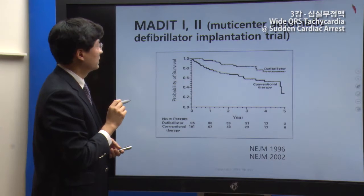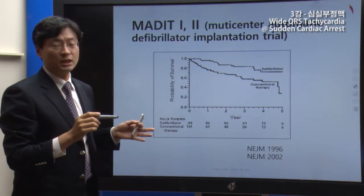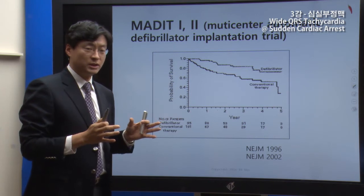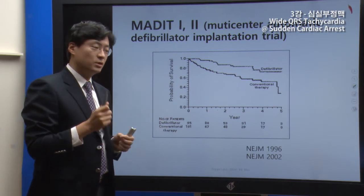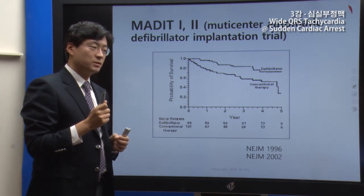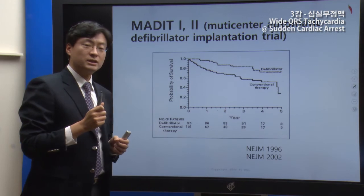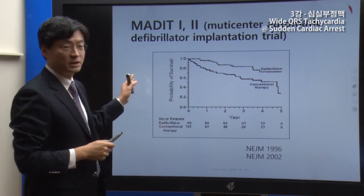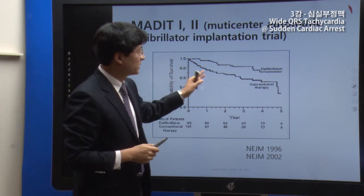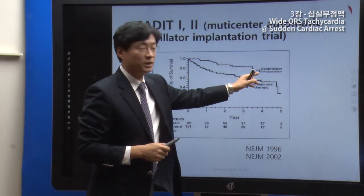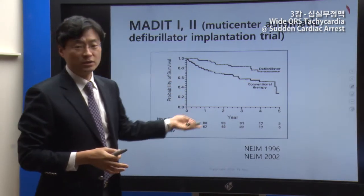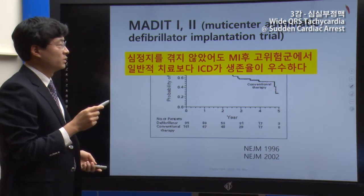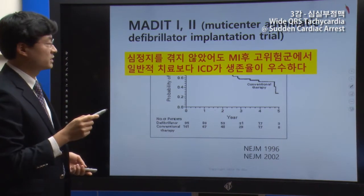The MADIT trial examined patients with low ejection fraction. In patients with low ejection fraction and high-risk cardiac disease, implanting a defibrillator showed better results compared to conventional drug therapy, with lower mortality in the high-risk disease group.